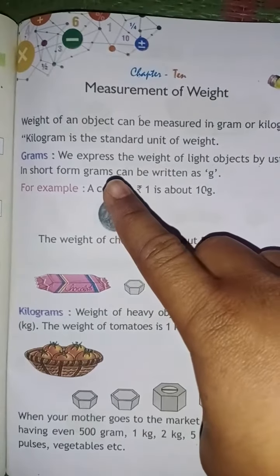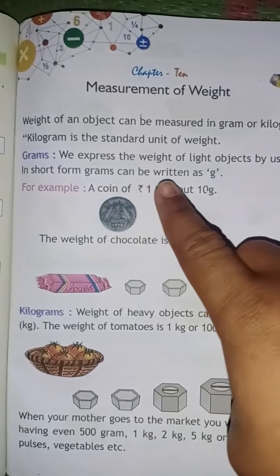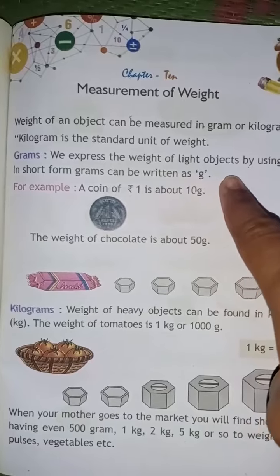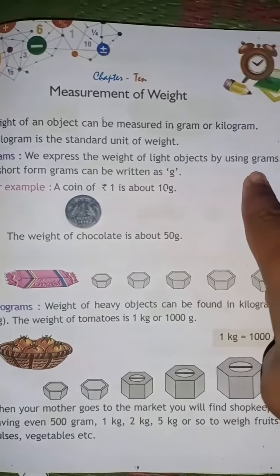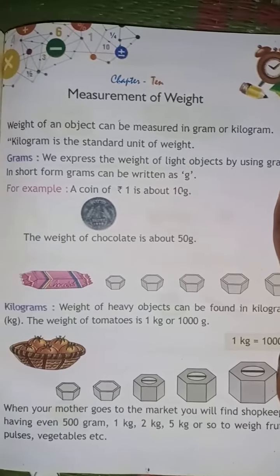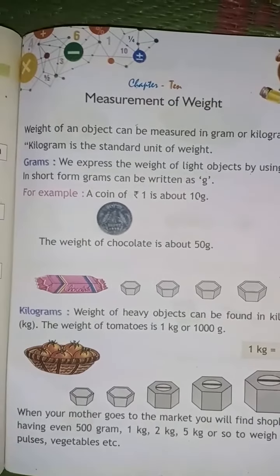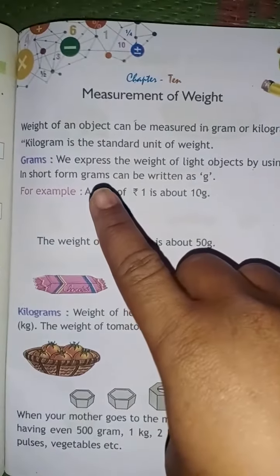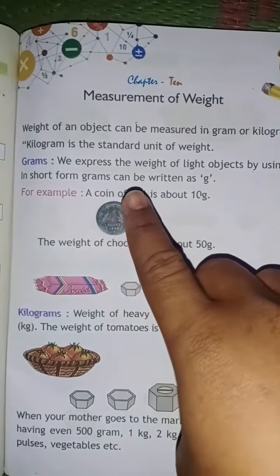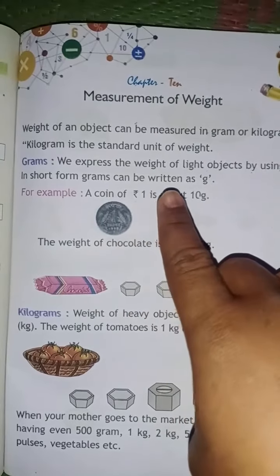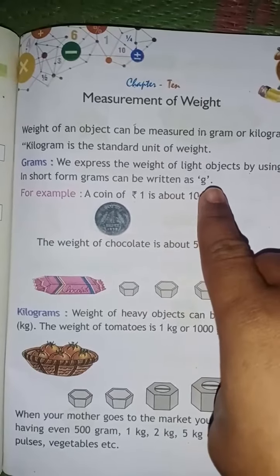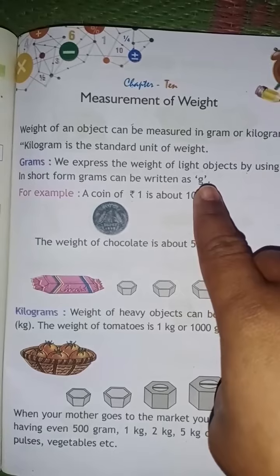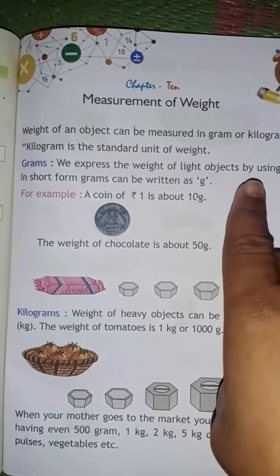We express the weight of light objects by using grams. In short form, grams can be written as G.